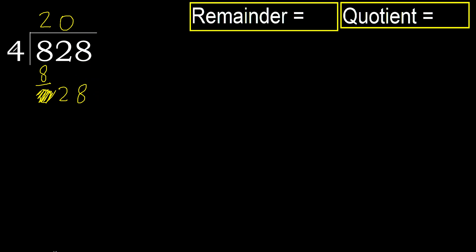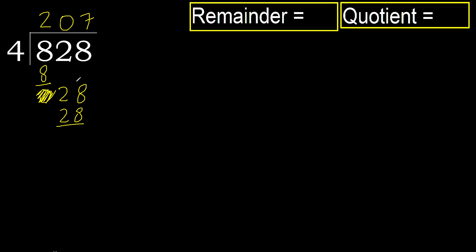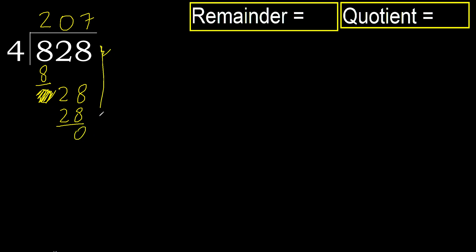28. 4 multiplied by 8 is 32, which is greater. Multiply by 7 gives 28 — it's not greater. Subtract. Next, there is no more number, therefore finish.